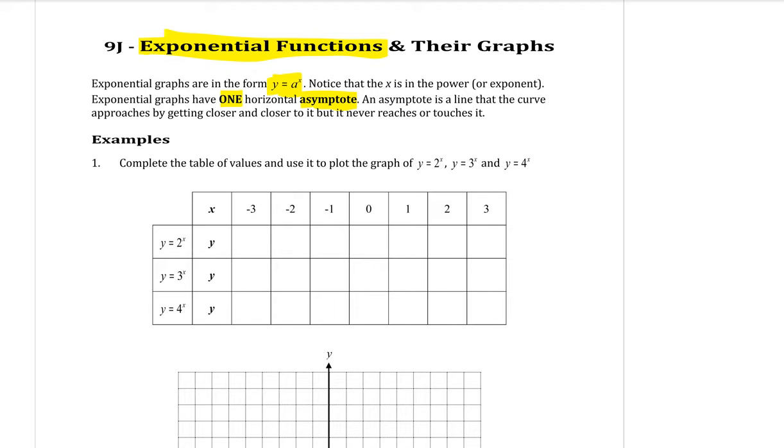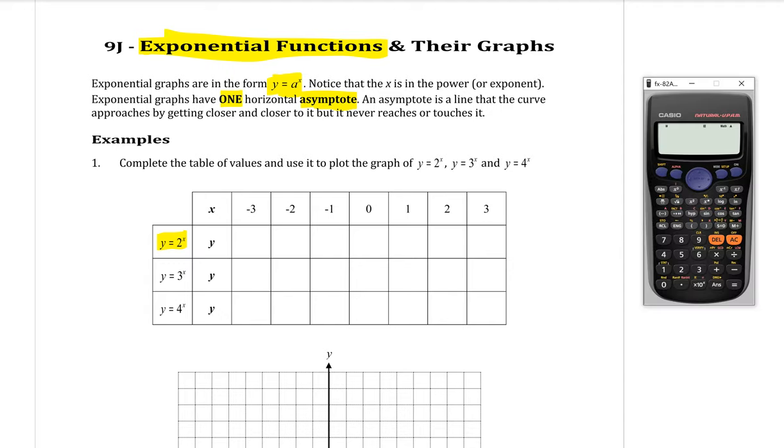So we are going to use a table to explore what exponential graphs look like. We have three different equations here. The first one is y equals 2 to the power of x. So we're going to use our calculator. 2 is what we call the base number. So I want 2 to the power of minus 3 and press equals and it gives me 0.125.